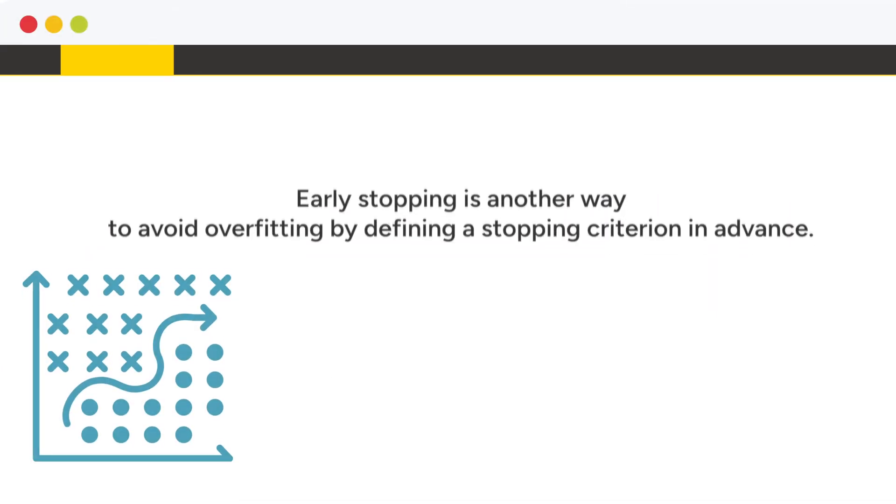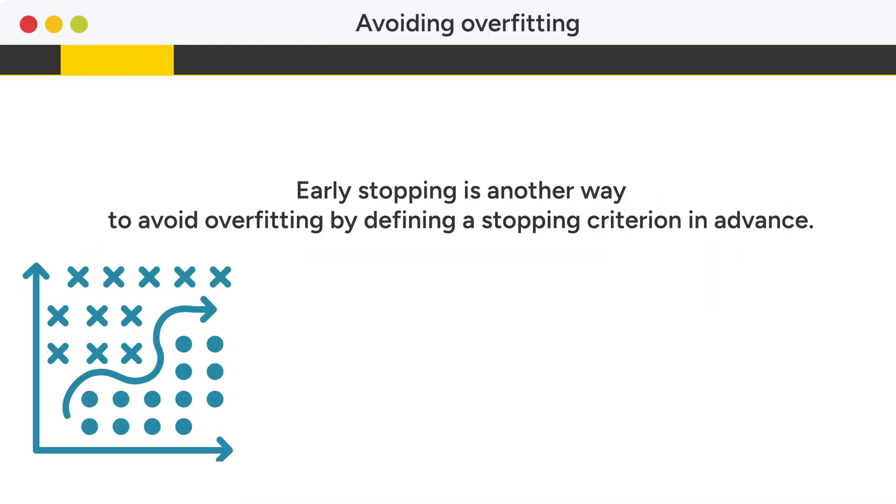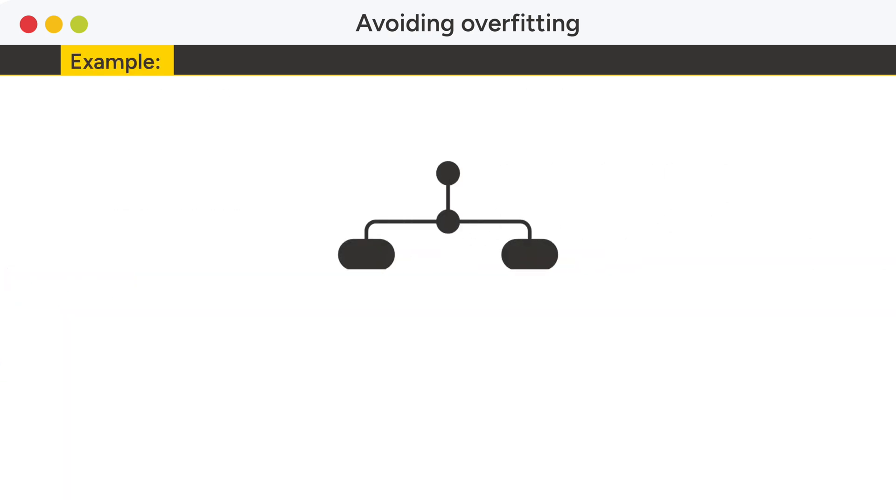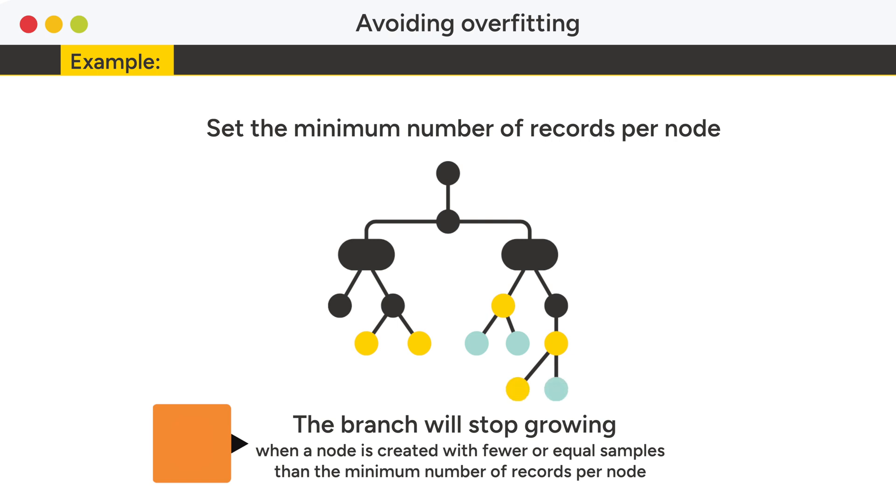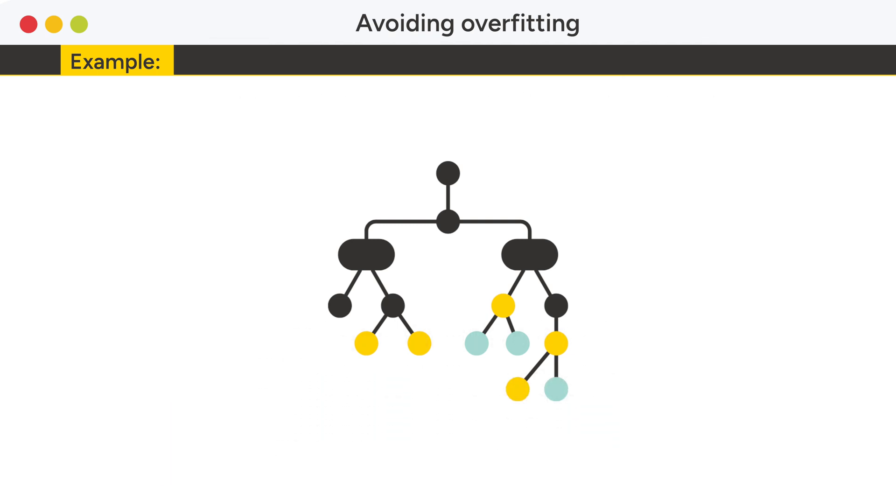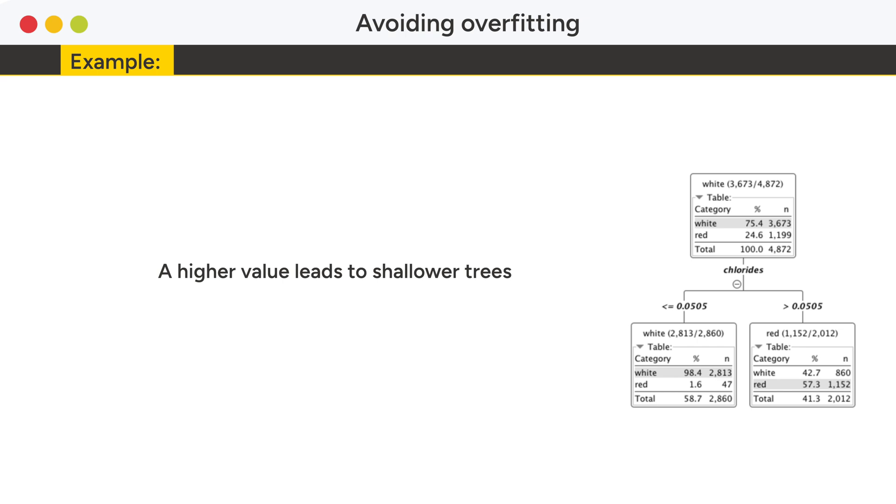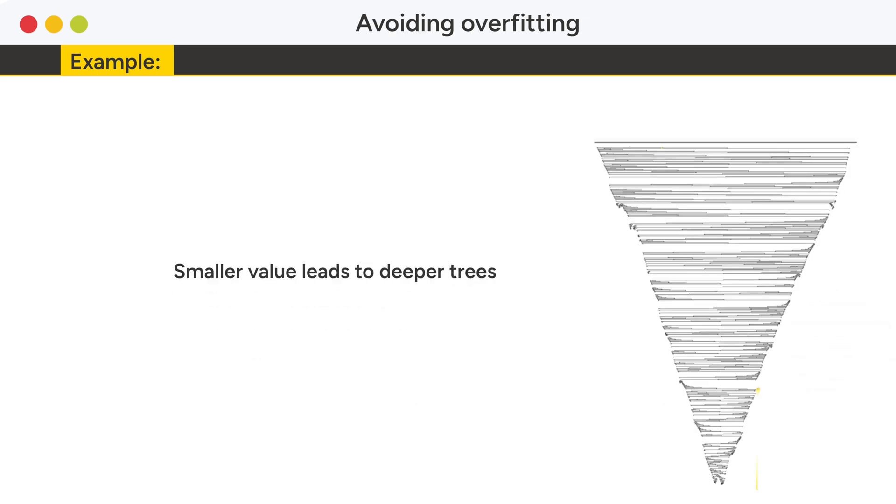Early stopping is another way to avoid overfitting by defining a stopping criterion in advance. One option is to set a minimum number of records per node. The branch will stop growing when a node is created with fewer or equal samples than the minimum number of records per node. A higher value leads to lower trees, while a smaller value leads to deeper trees.